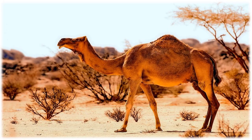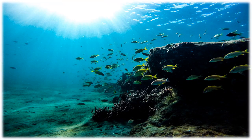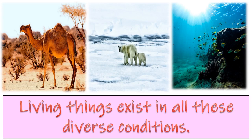Students, see some pictures here — a picture of desert, picture of snow region, and a picture of ocean. All these pictures are of different places. The geographical conditions at all these places on the earth are different, but even then we find that living things exist in all these diverse conditions. All living things try to adjust themselves to the conditions there. They have this ability.